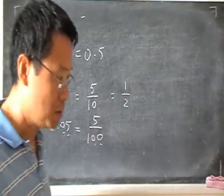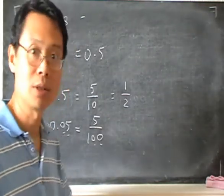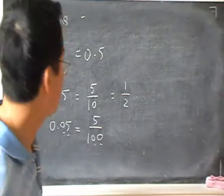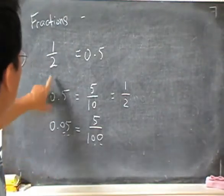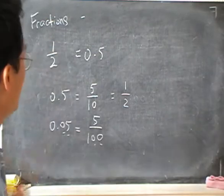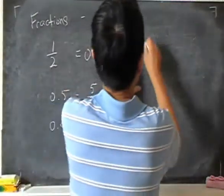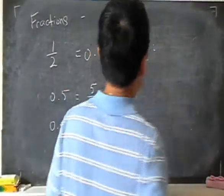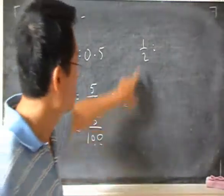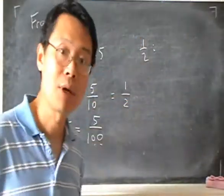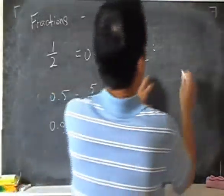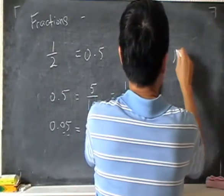Of course, if you have a calculator, the easiest way is just to press the calculator. But if you don't, then the way to do it is to think about the half as a division. Meaning, to think about the half as 1 divided by 2. And you do a long division with it.